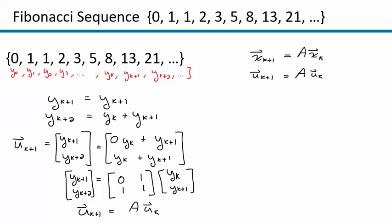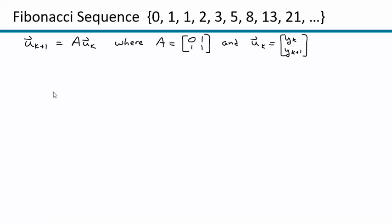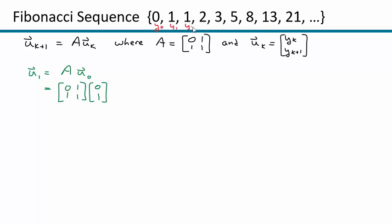Let's test this out. Let's find u sub 1. We have u sub 1 equals A times u sub 0, so [[0,1],[1,1]] times [0, 1] — where u sub 0 is [y sub 0, y sub 1] = [0, 1]. If we multiply those together, we get [0 plus 1, 0 plus 1] = [1, 1], which is [y sub 1, y sub 2]. Pretty neat.